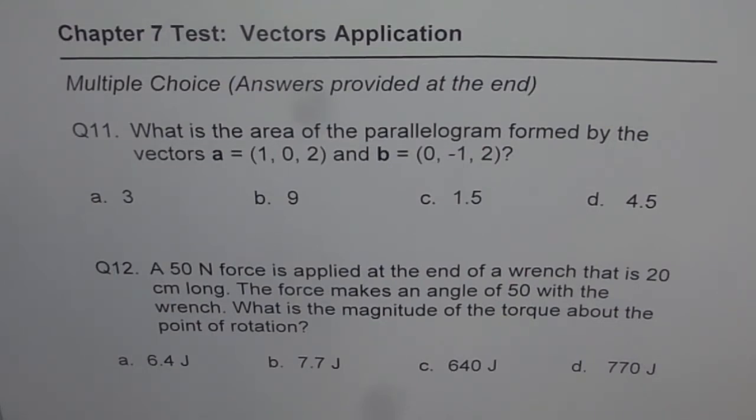Question 12 is: A 50N force is applied at the end of a wrench that is 20 cm long. The force makes an angle of 50 degrees with the wrench. What is the magnitude of the torque about the point of rotation? And the four choices for you are 6.4 joules, 7.7 joules, 640 joules or 770 joules.